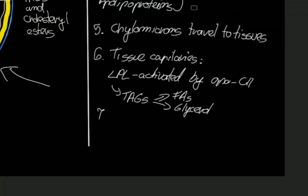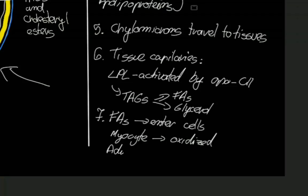In step 7, fatty acids can then enter the cells. And if we're talking about the myocyte or the muscle cell, then they will be used or oxidized for fuel. And if we're in the adipocytes, they will be re-esterified into triacylglycerols and stored for the longer term.